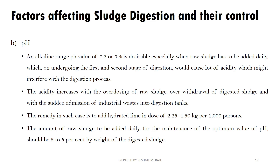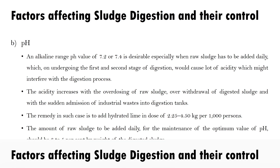The optimum pH for sludge digestion is 7.2 to 7.4. Acidity increases with overdosing of raw sludge, over-withdrawal of digested sludge, and with sudden admission of industrial waste into the digestion tanks. The remedy is to add hydrated lime in a dose of 2.25 to 4.5 kg per 1000 litres. The amount of raw sludge to be added daily for maintenance of optimum pH should be 3–5% by weight of the digested sludge.